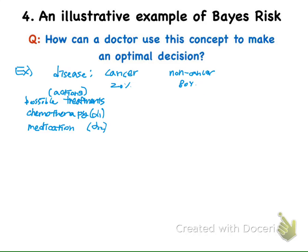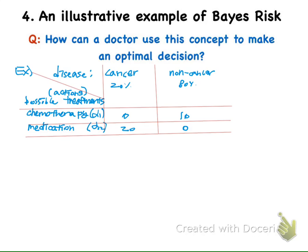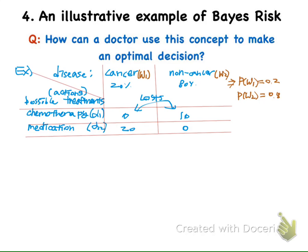There are two actions that we can take. The first action is chemotherapy, and the second action is medication. We form this loss matrix. The costs are defined slightly different from the previous case, just for illustration. From this population information, we get the priors for class 1 and class 2, and all the lambdas from the loss matrix.